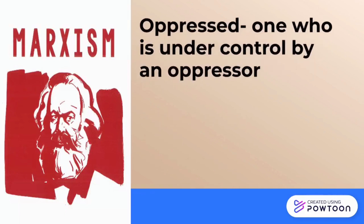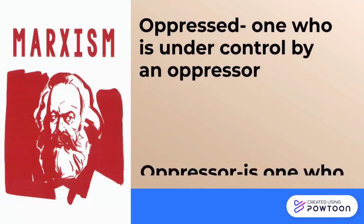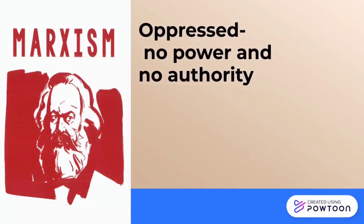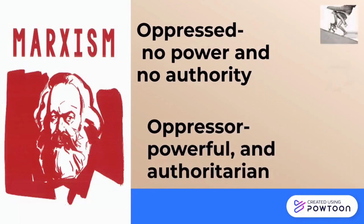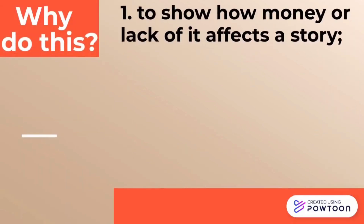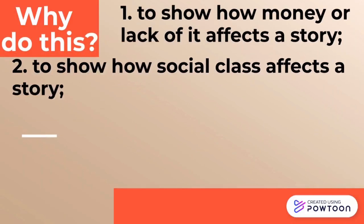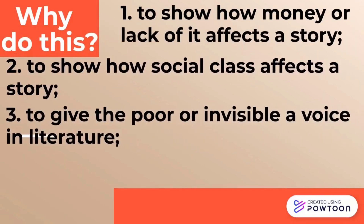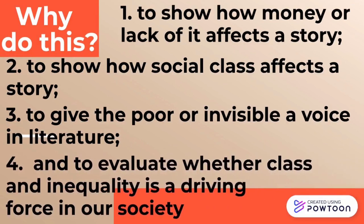Oppressed and oppressor. The oppressed is one who is under control by an oppressor. The oppressor is one who uses their power to control the oppressed. The oppressed has no power and no authority. Why do this? To show how money, or lack of it, affects a story. To show how social class affects a story. To give the poor, invisible, or disenfranchised a voice in literature. To evaluate whether class and inequality is a driving force in our society.